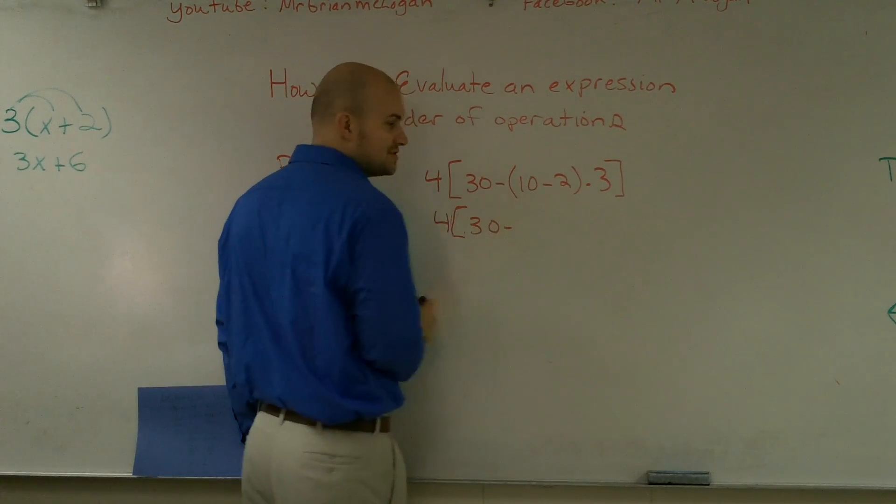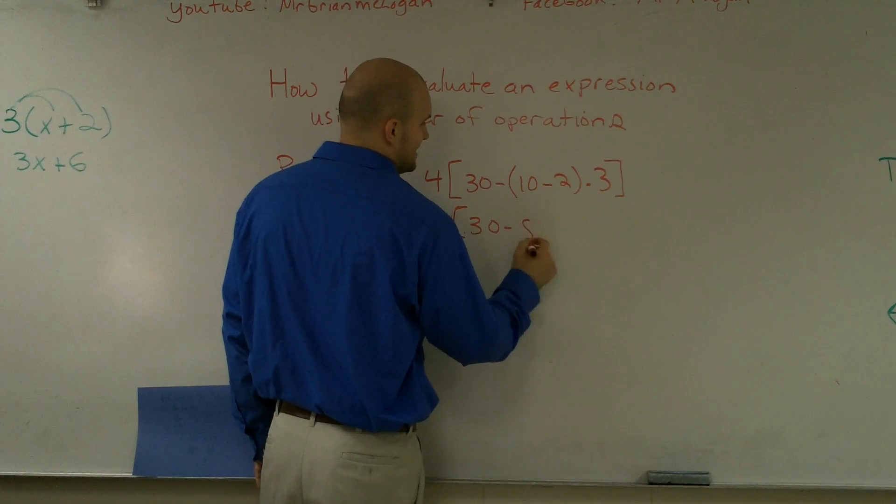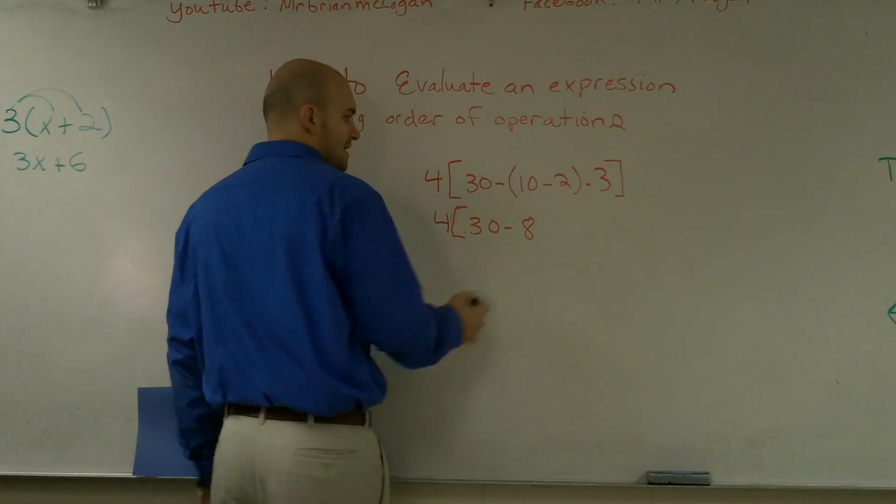30 minus, 10 minus 2 becomes 8, and then times 3.